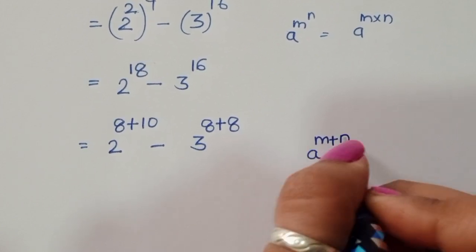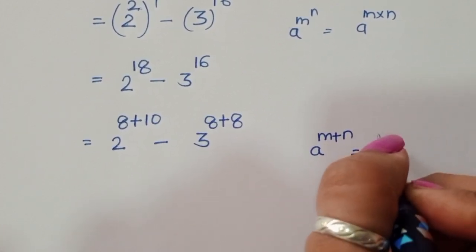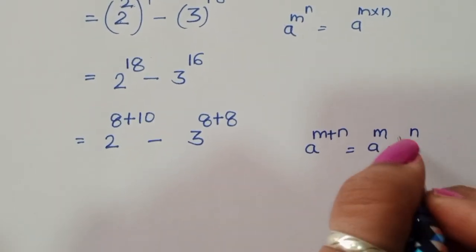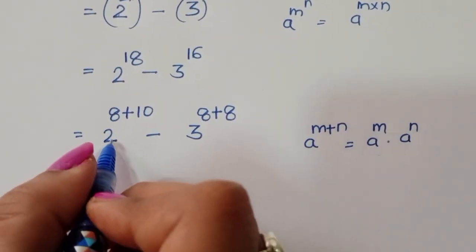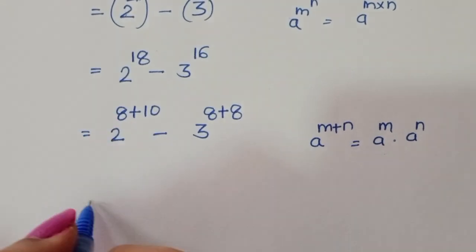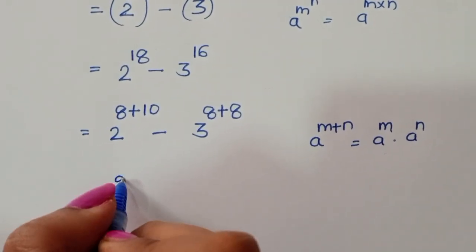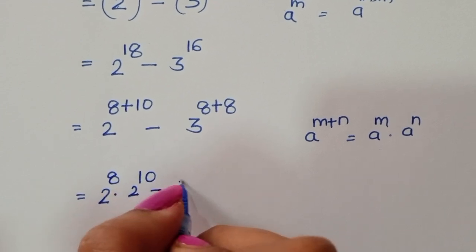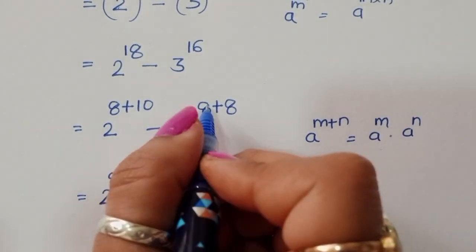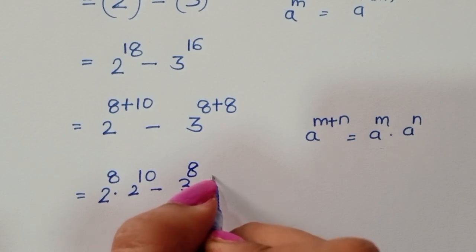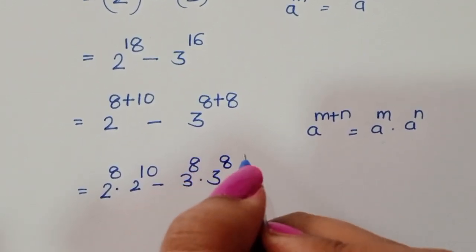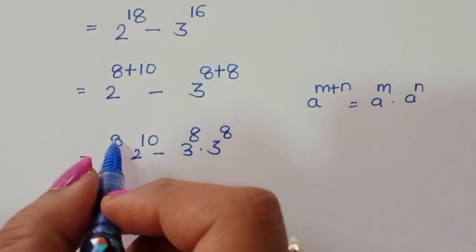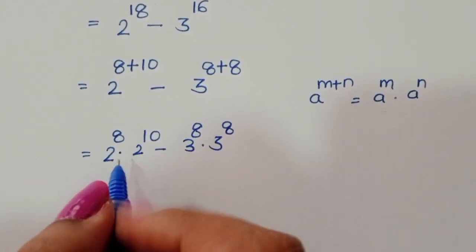Using the formula a power m plus n equals a power m times a power n, we can write 2 power 8 times 2 power 10, minus 3 power 8 times 3 power 8.